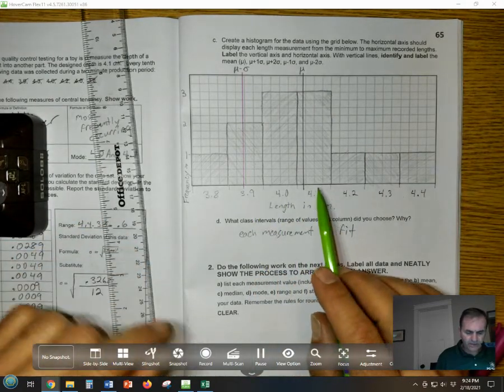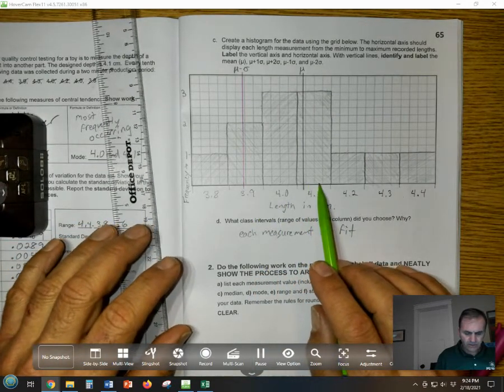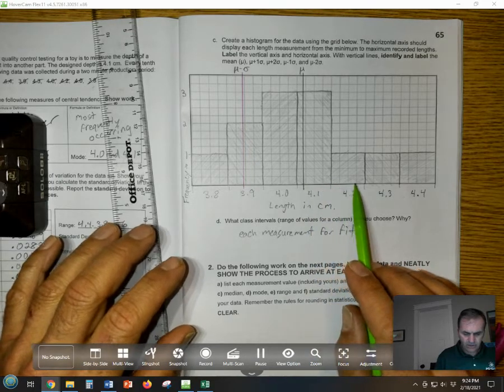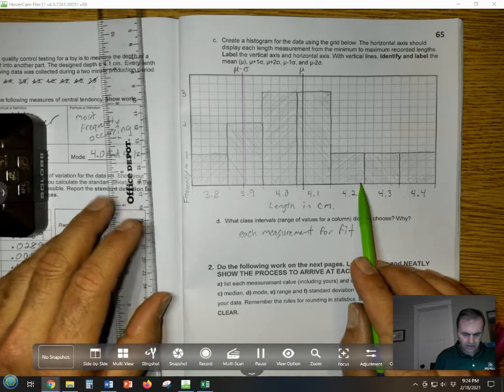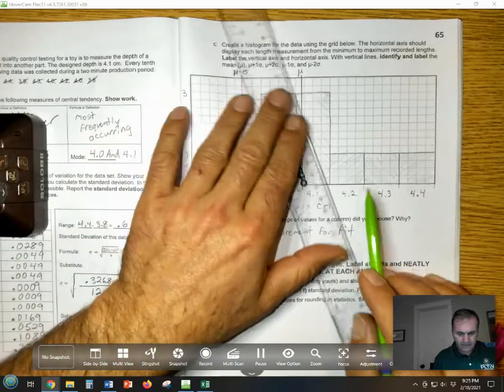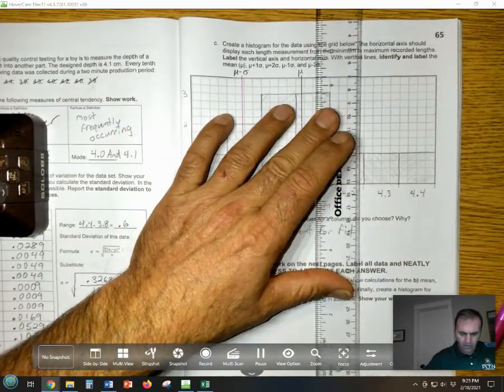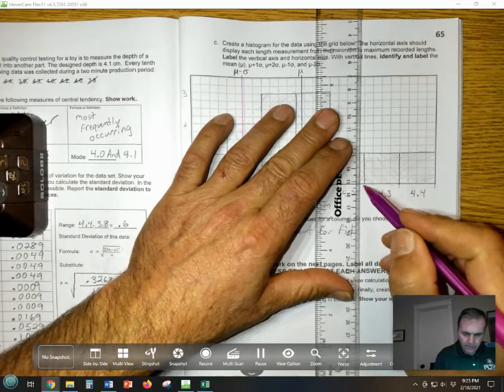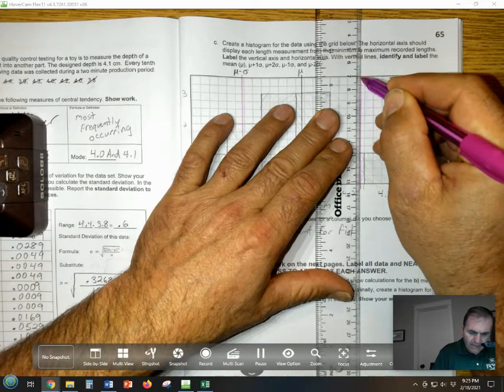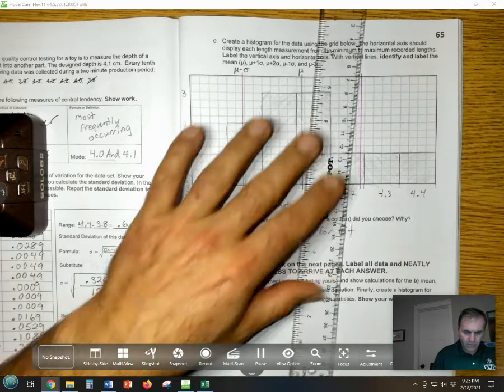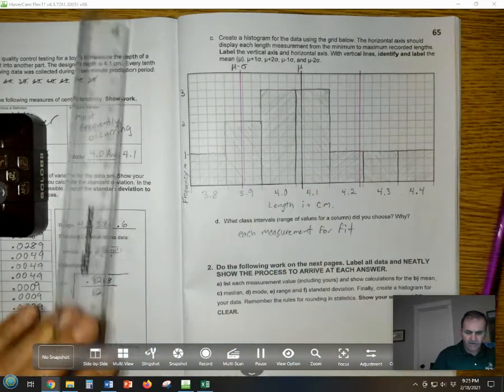So the same distance away, which is about one, two, three, four is one, and one, two, three, is almost to the 4.2. That is the mean plus a standard deviation. So on one side is the mean minus the standard deviation, on the other side is the mean plus a standard deviation.